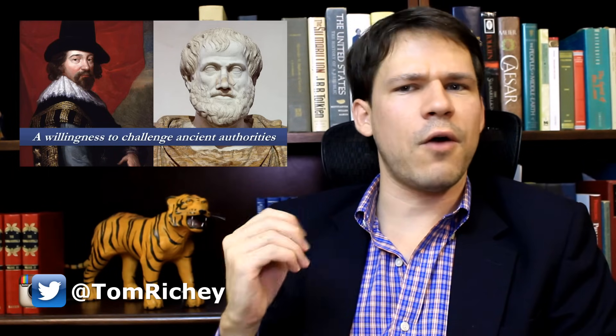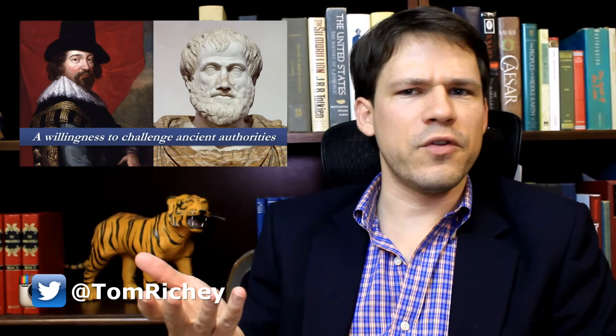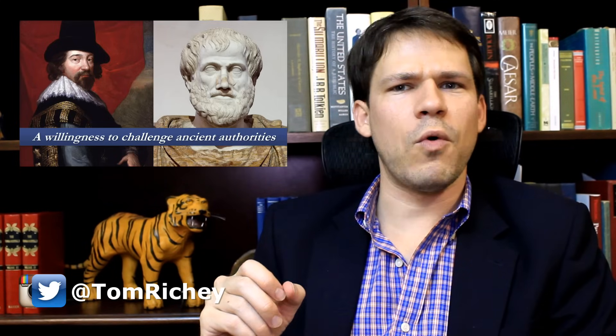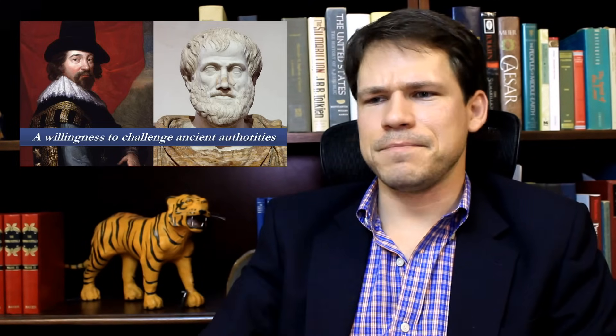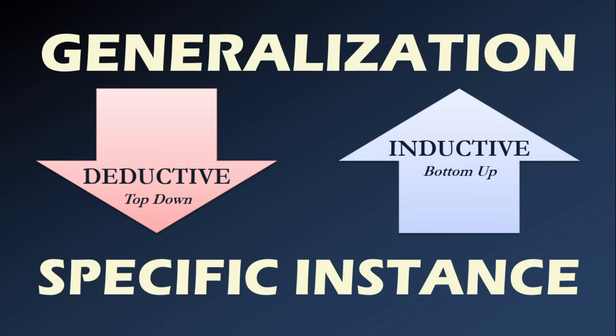This willingness to challenge ancient authorities is something people had not done for about 2,000 years. When you think about these ancient authorities like Aristotle, they were still towering very high. Aristotle's still a big deal today, but he's certainly not the foundation for physical science. The simplest way we can compare inductive and deductive reasoning is to look at deductive reasoning as top-down, where we start with a generalization and it leads us to a specific instance. Whereas inductive reasoning is bottom-up, where we start with a number of specific instances, and that leads us to make a generalization.